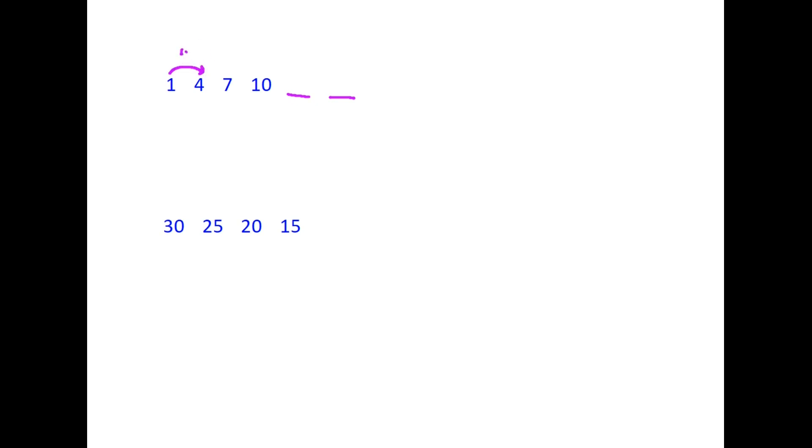To get from 1 to 4 we are adding 3. Does this work each time? 4 plus 3 is 7, 7 plus 3 is 10. Therefore to find the next number it is 10 plus 3, we would get the number 13 and to go again would be another plus 3 and the last number we are looking for is 16. So the rule that we found there was plus 3.